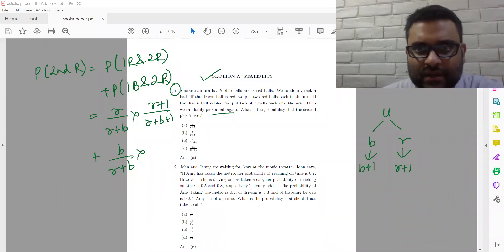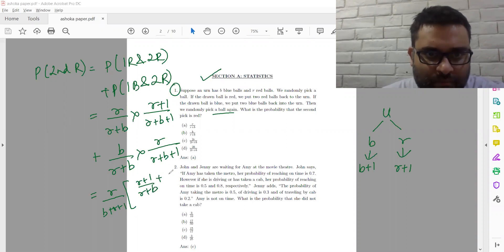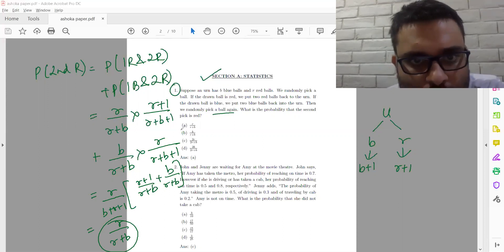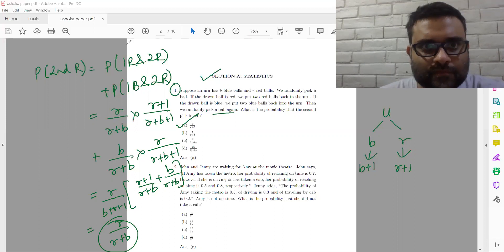Here this will be R plus 1 instead of R. Because it will be R plus 1 red balls. So here it will be R red balls that are there divided by R plus B plus 1. So then what do I do? I basically take R by B plus R plus 1 common. So we get R plus 1 by R plus B plus B by R plus B. That cancels out. So we get R by R plus B ultimately. Answer is A. That's the first question. Let's go to the next one now.